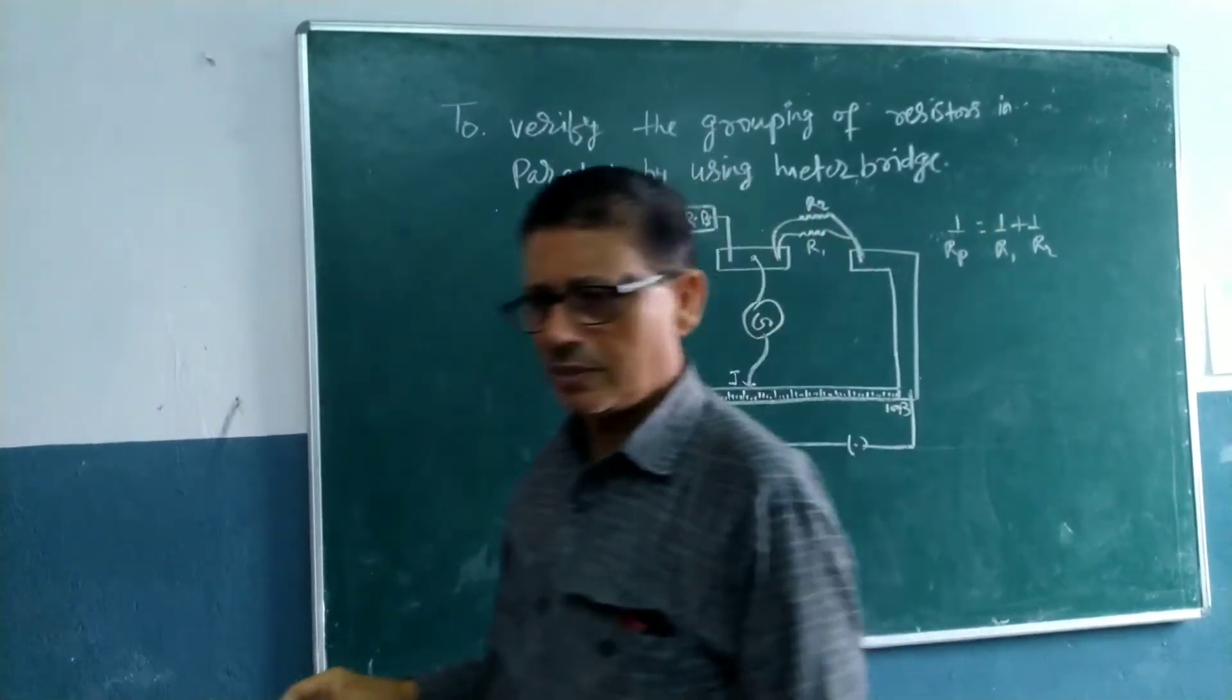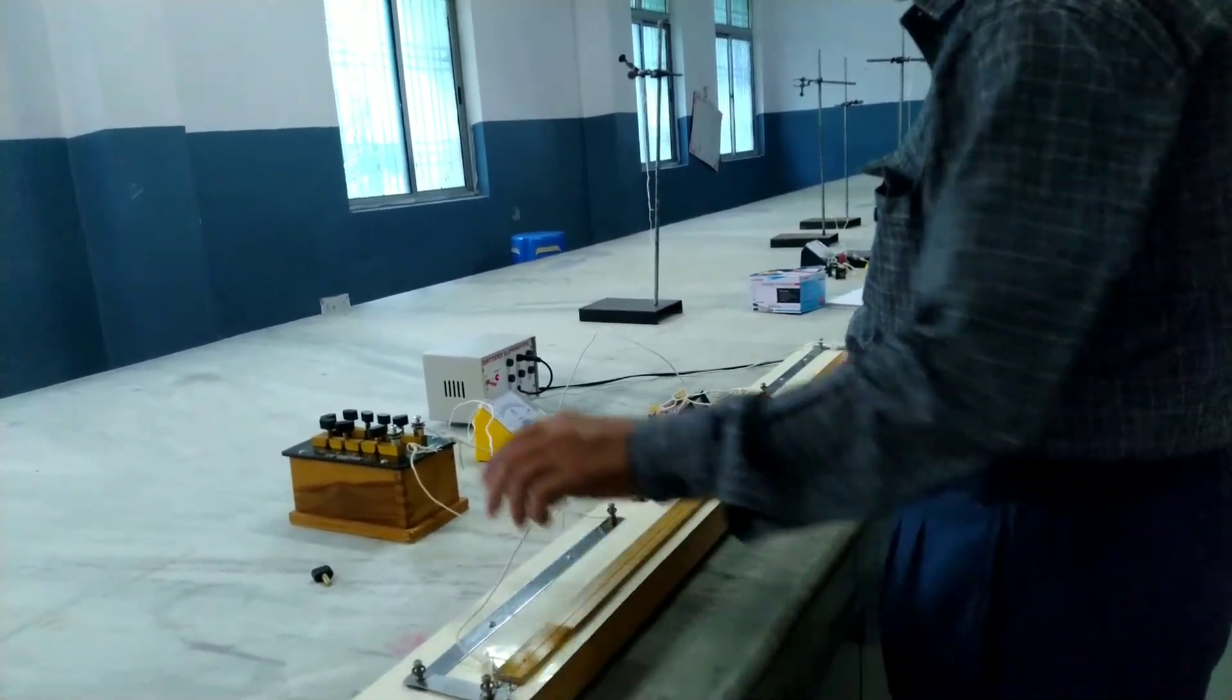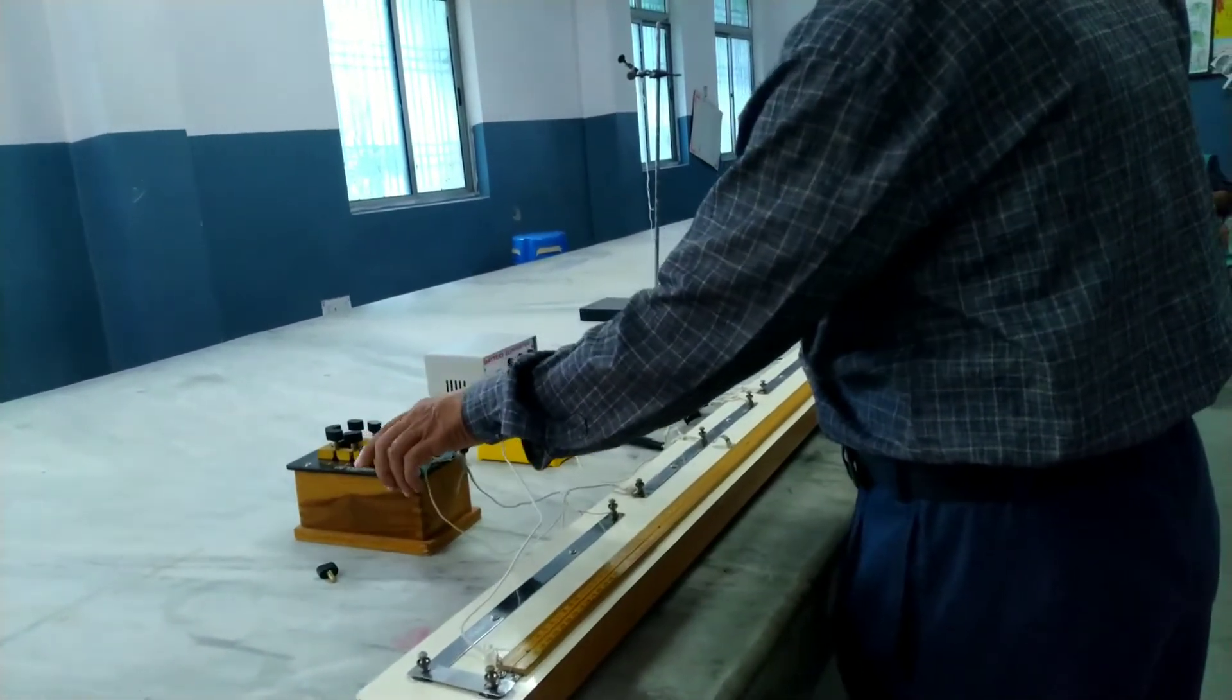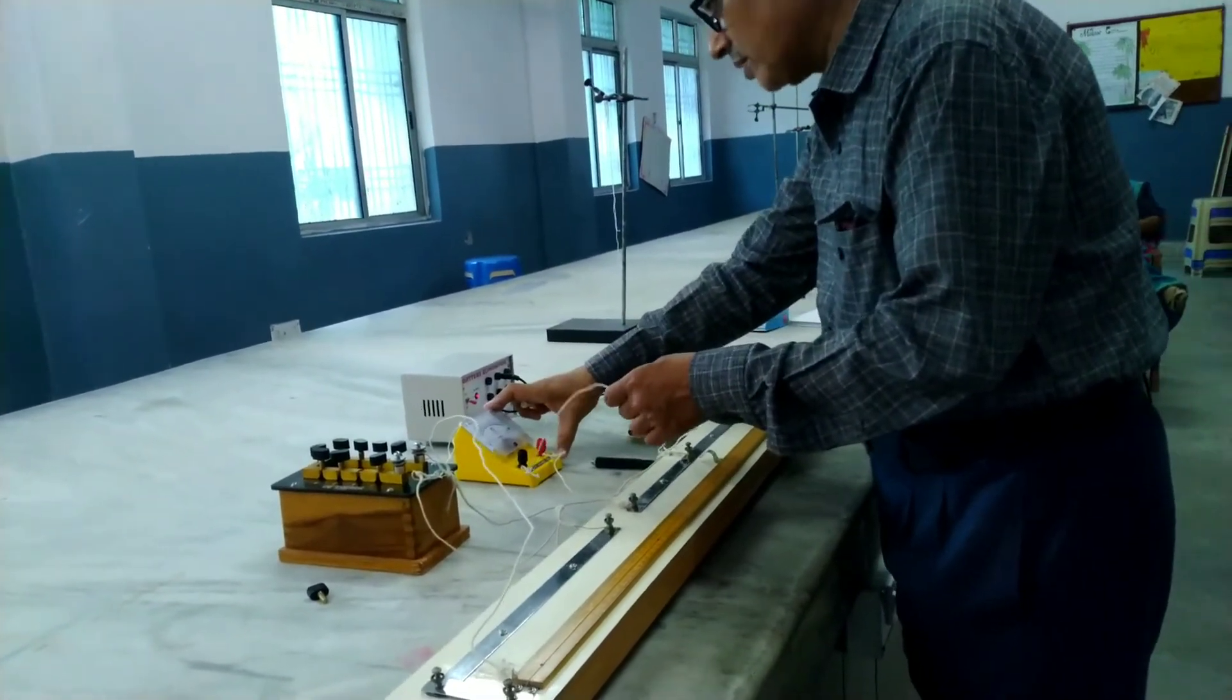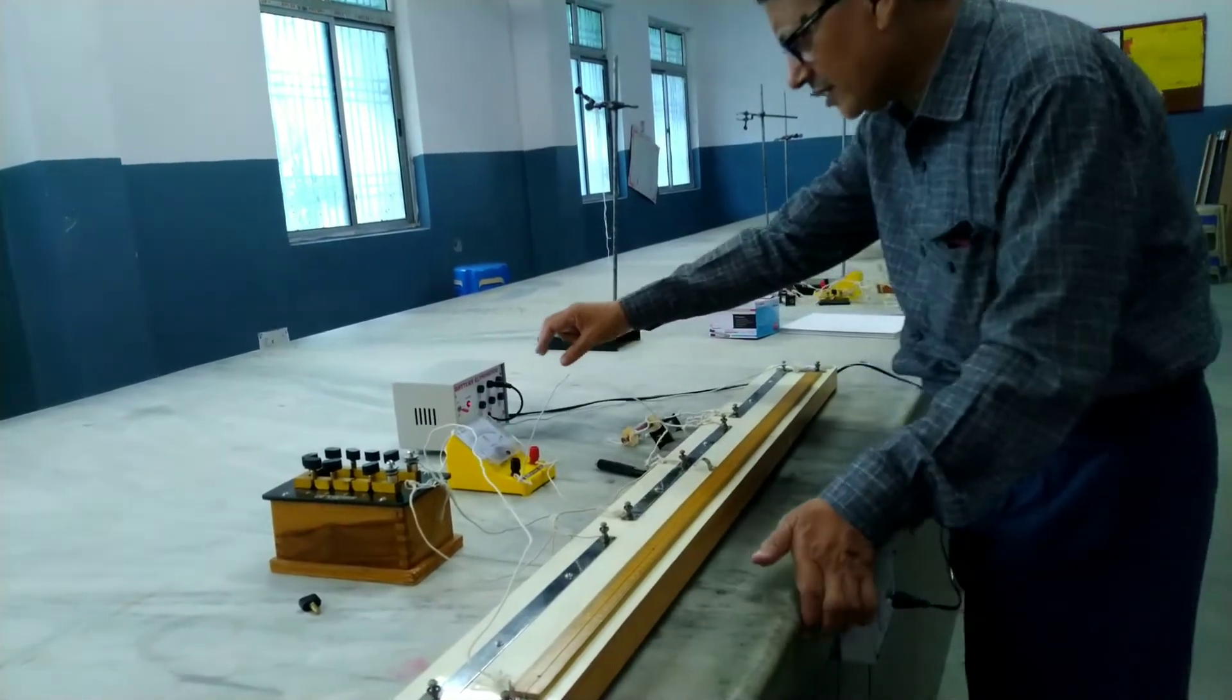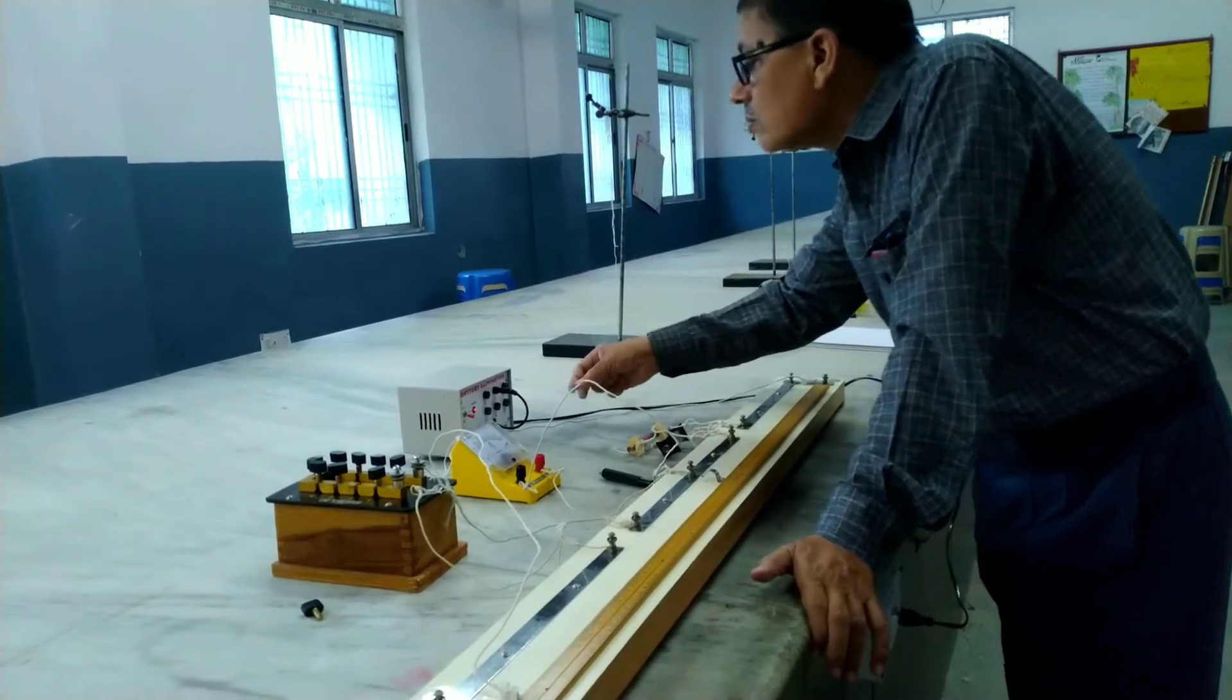See the connection. This is the meter bridge, having length of one meter. This is R, the resistance box, and this stands for galvanometer. Here is the meter bridge that you can use for two volts, four volts, or six volts.